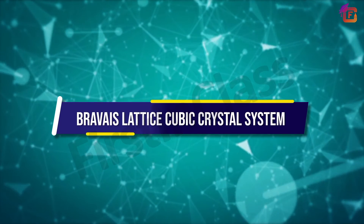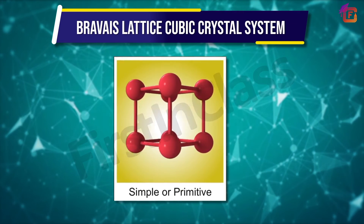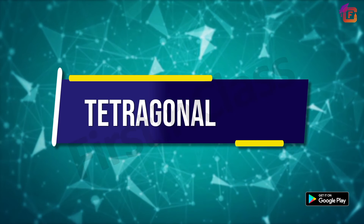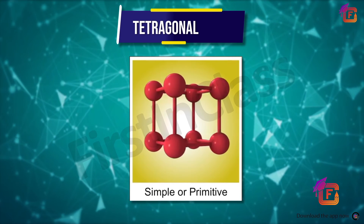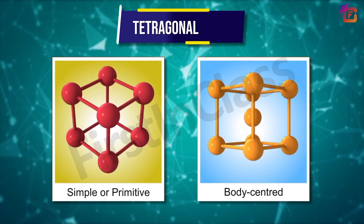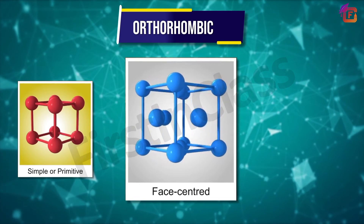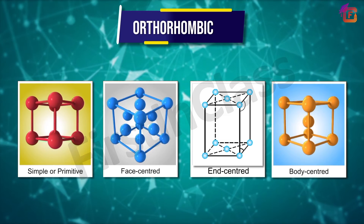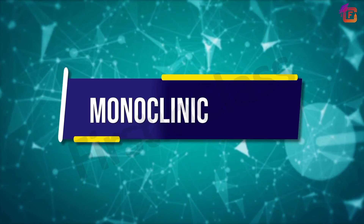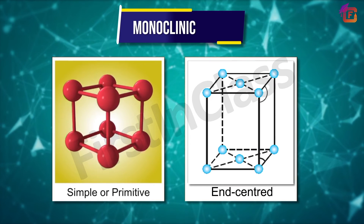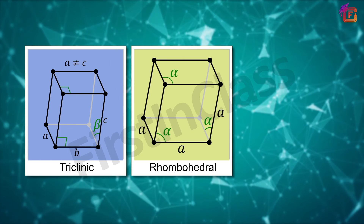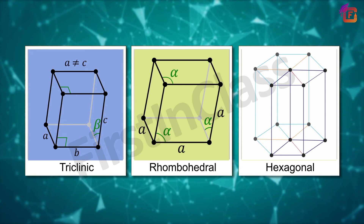All these types of unit cells and crystal systems form 14 kinds of Bravais lattices. The cubic crystal system has three kinds of Bravais lattice: simple or primitive, face-centered, and body-centered. Tetragonal has two kinds: simple or primitive and body-centered. Orthorhombic has four kinds including body-centered. Monoclinic has two kinds: simple primitive and end-centered. Triclinic, rhombohedral, and hexagonal each have one kind of Bravais lattice only.